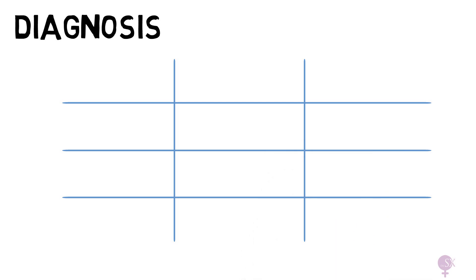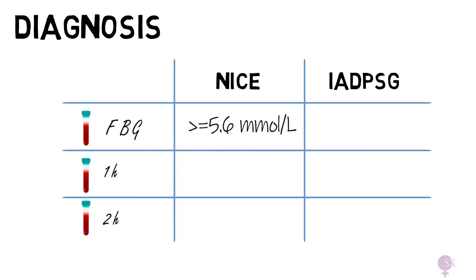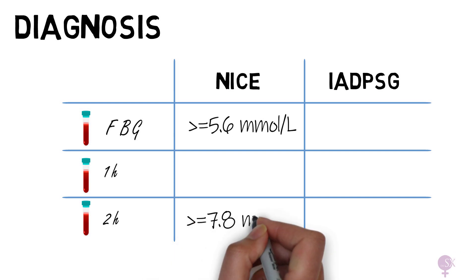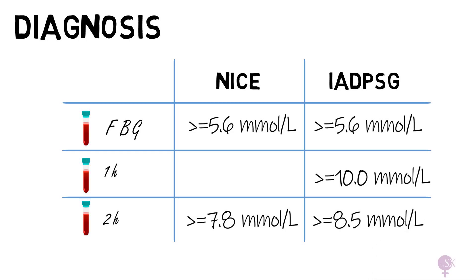A diagnosis of GDM can be made depending on the results. Different sets of recommendations have different values, and here we are comparing the NICE guidelines to the IADPSG guidelines — the International Association of Diabetes and Pregnancy Study Groups. With NICE, GDM is diagnosed with either a fasting blood glucose of 5.6 millimoles per liter or more, or a 2-hour blood glucose of 7.8 millimoles per liter or more. With the IADPSG guidelines, the fasting must also be 5.6 or more, the 1-hour 10.0 or more, and/or the 2-hour 8.5 millimoles per liter or more.